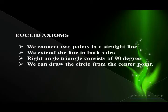Euclid's axioms are the following: We connect two points in a straight line. We extend the line in both sides. Right angle triangle consists of 90 degrees. We can draw the circle from the center point.